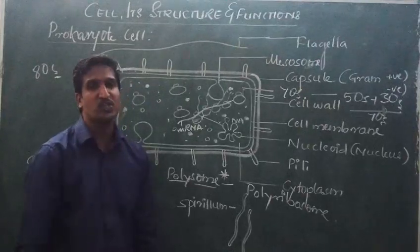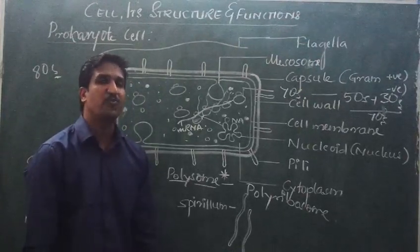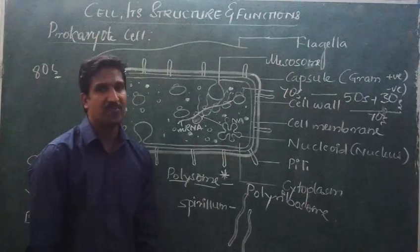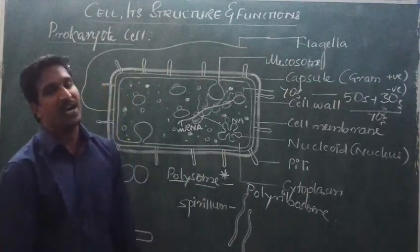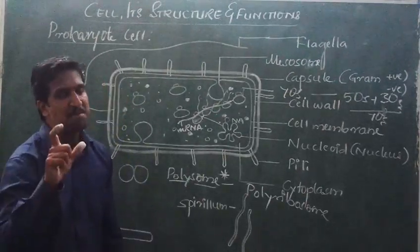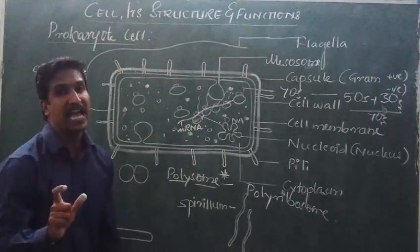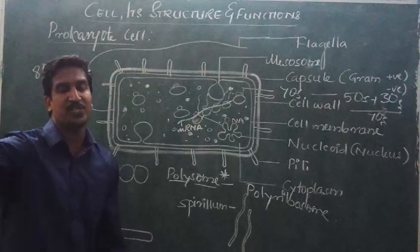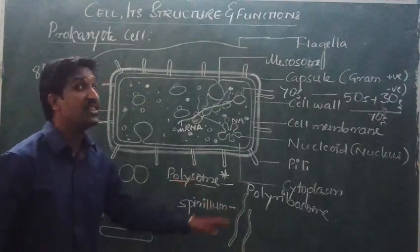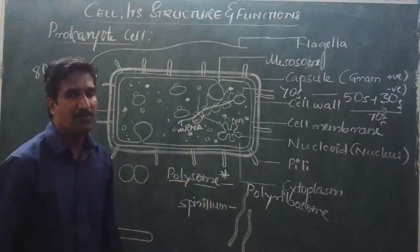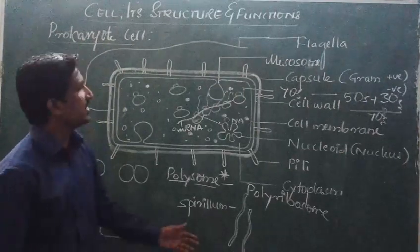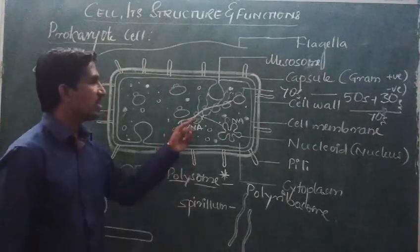One more important question: What is polysome? What is polyribosome? In NEET level, they will ask: on one mRNA, more than two ribosomes are held, called option A, B, C, or D. They will give it in this way. NEET level question.